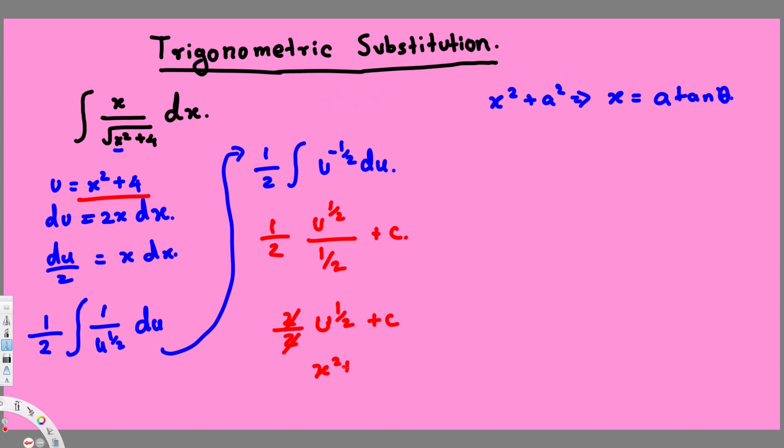So this is going to be x squared plus 4 power half plus constant. Now this is equivalent to square root of x squared plus 4 plus constant. That's going to be our final answer. I hope you guys find this video helpful. See you next time.